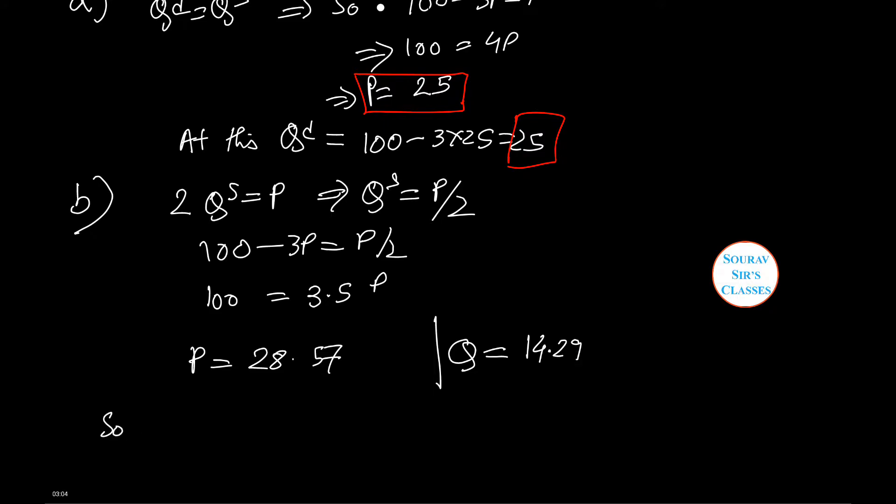So, after government intervention, prices will be up to 28.57 and Q decreases to 48.57.